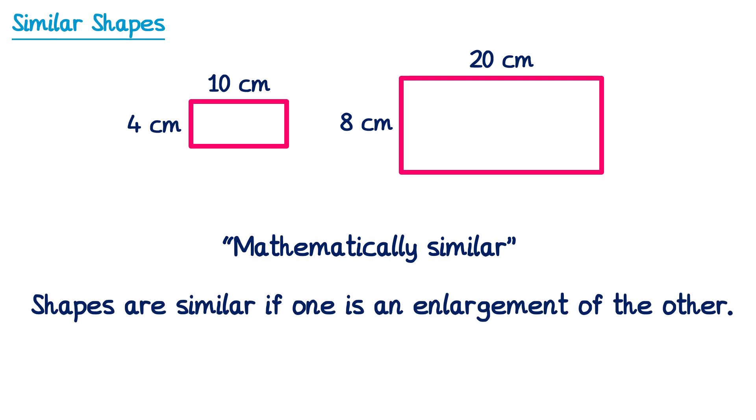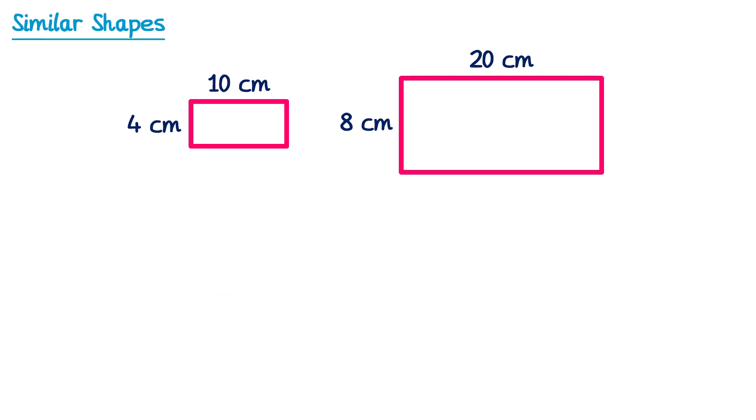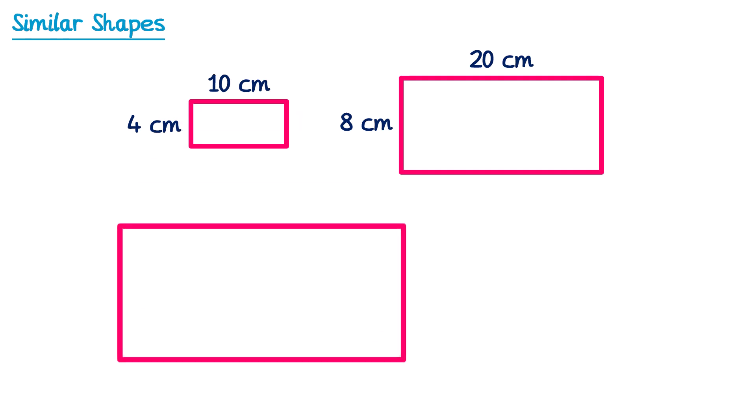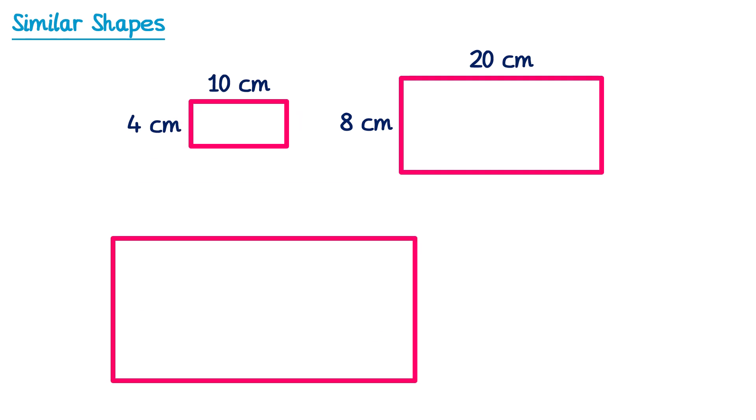There are many different ways of drawing shapes that are similar to this original rectangle. We didn't have to double those lengths, we could have tripled them. So if we did that we'd end up with a rectangle where the width across the top would go from 10 to 30, since 10 times 3 is 30, and the height would go from 4 to 12, since 4 times 3 is 12.